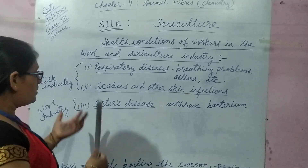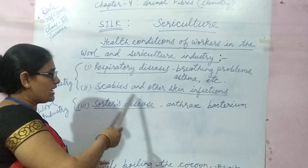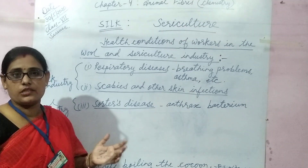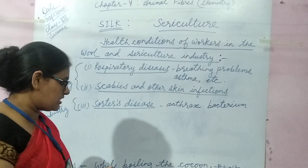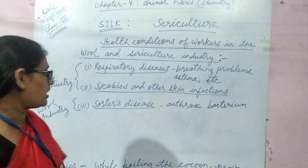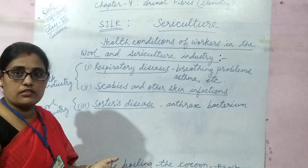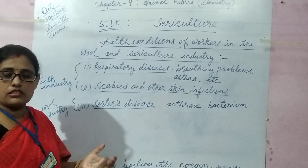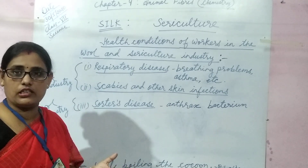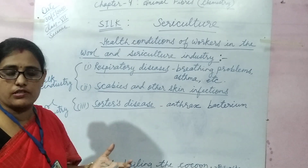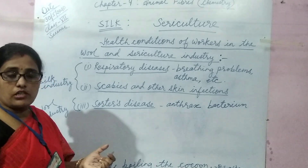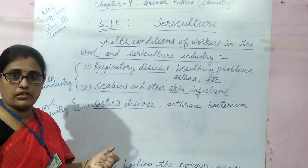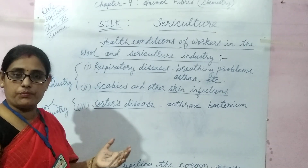People working in sericulture industries can get infected by various diseases. Number one is scabies: while boiling the cocoon, workers continuously dip their hands in warm water, causing the skin to become raw and blistered. The second disease is respiratory disease like asthma, which occurs from continuous inhalation of vapors while boiling cocoons. A particular disease called sorter's disease is caused by anthrax bacteria and is seen in people working in wool industries.